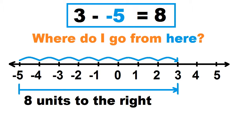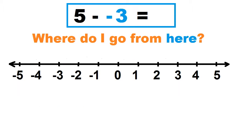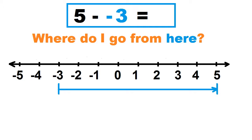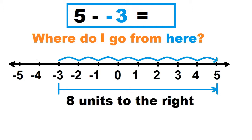Another example: 5 minus negative 3. Where do I go from negative 3? Count the number of units from negative 3 to 5, and take note of the direction. To the right is positive, to the left is negative. Let's count: 1, 2, 3, 4, 5, 6, 7, 8. That's 8 units to the right. So 5 minus negative 3 equals 8.